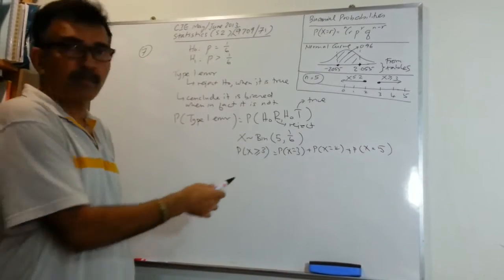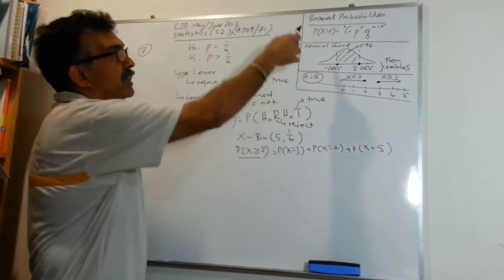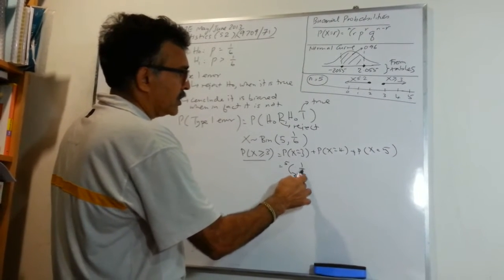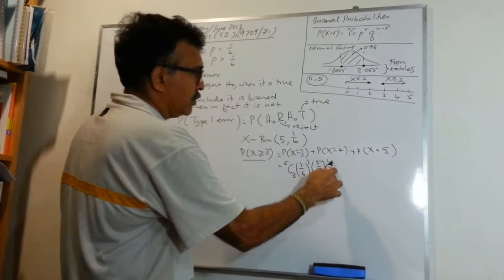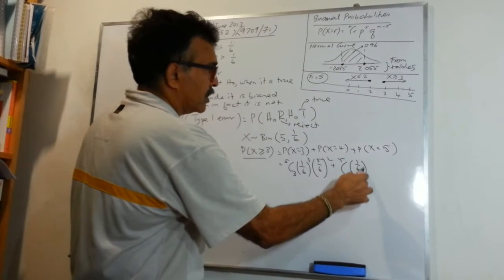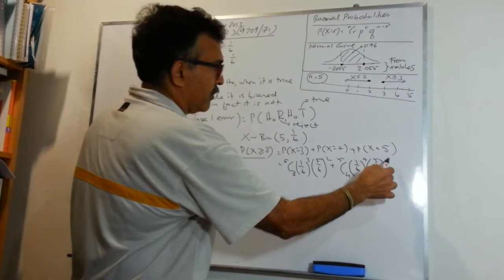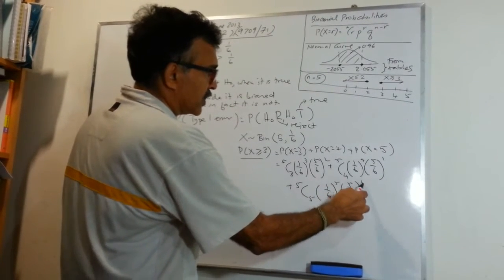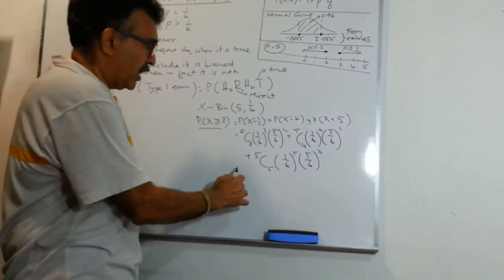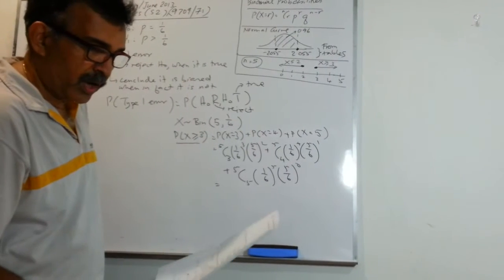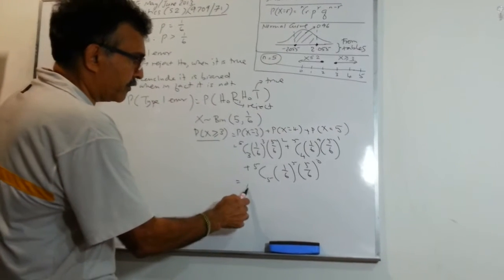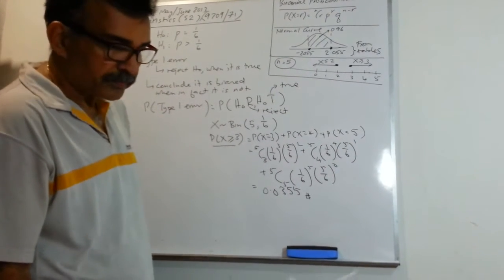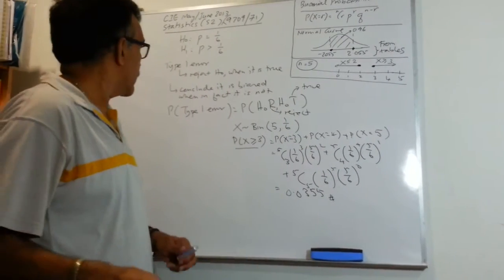Using the binomial formula, we have 5C3 times (1/6)^3 times (5/6)^2, plus 5C4 times (1/6)^4 times (5/6)^1, plus 5C5 times (1/6)^5 times (5/6)^0. Using a calculator, you get 0.0355.